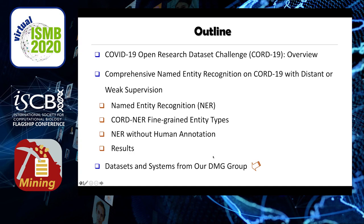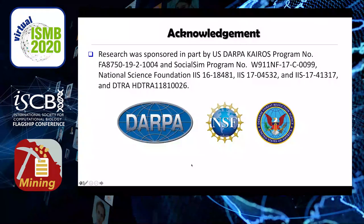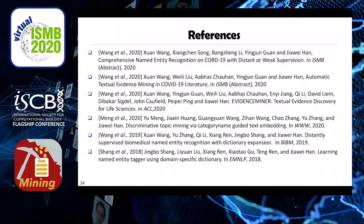In summary, here are all the datasets and systems from our data mining group at UIUC developed for COVID-19 literature study. This includes the CORD-NER dataset we introduced, with links to our corpus website and download. Based on the CORD-NER dataset, we also built an evidence-miner system that can automatically retrieve textual evidence given a human input query in natural language. There is also SETSearch, a literature search engine for COVID-19. Our research is supported by funding from DARPA, NSF, and DITRA.